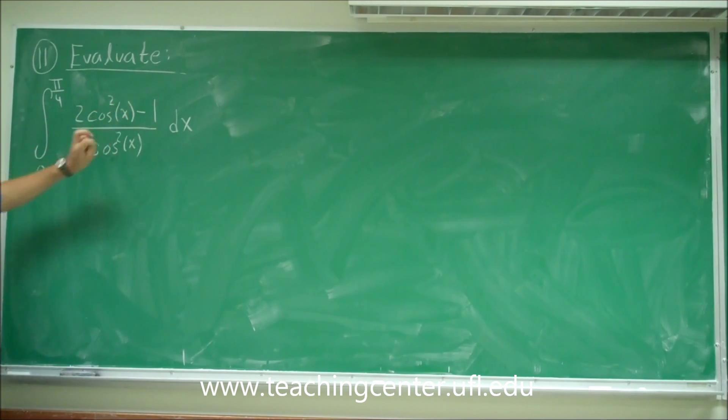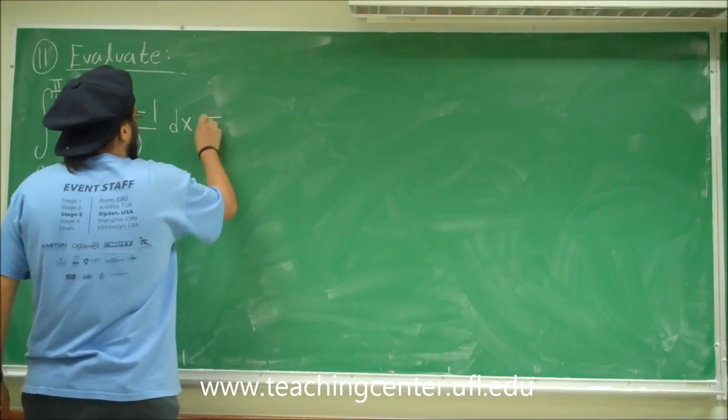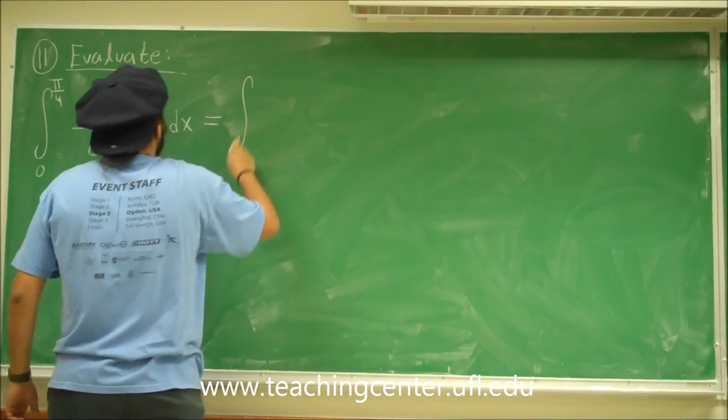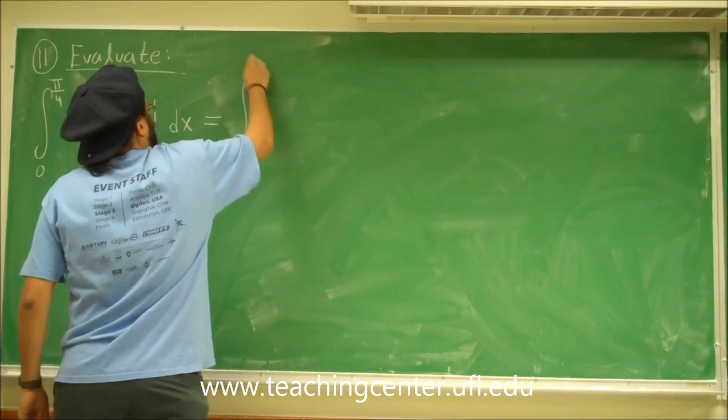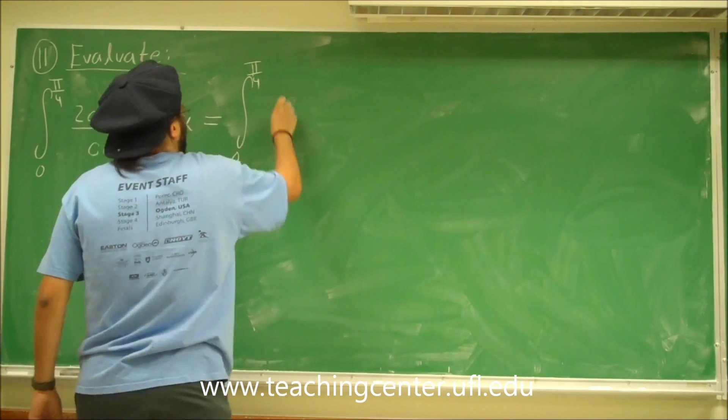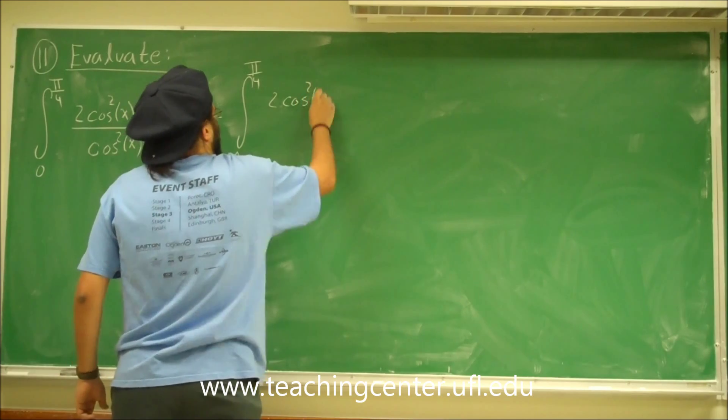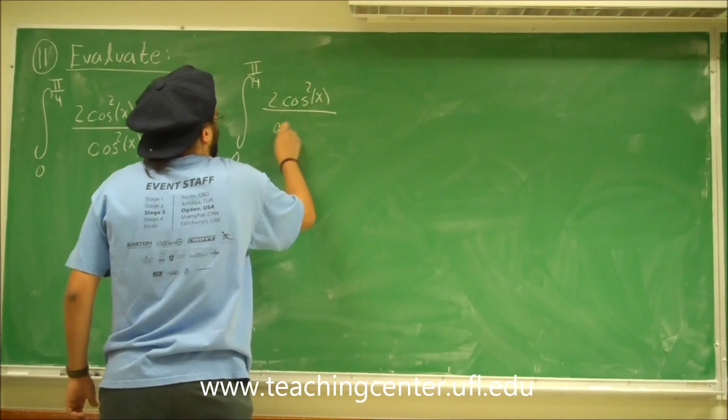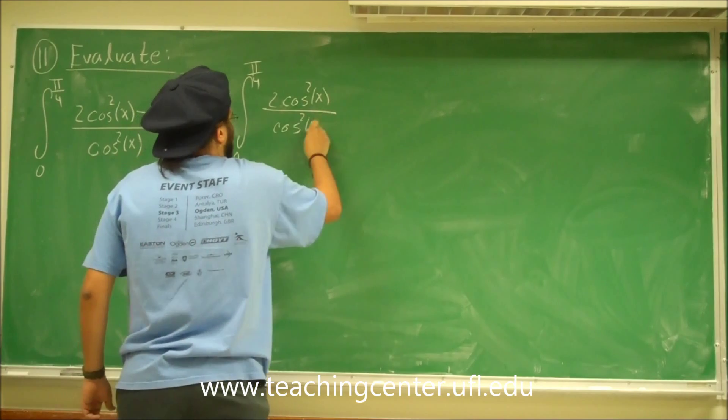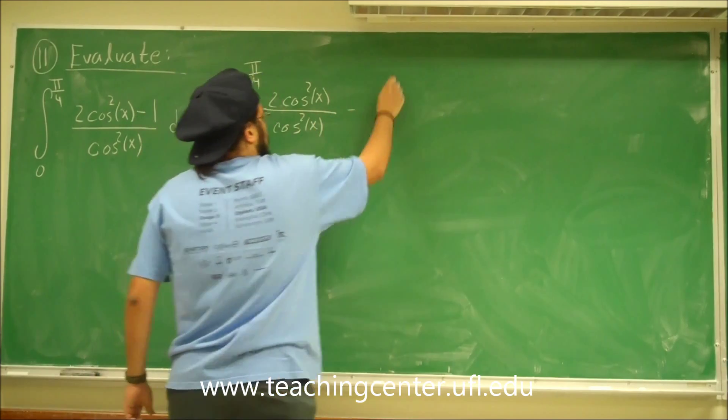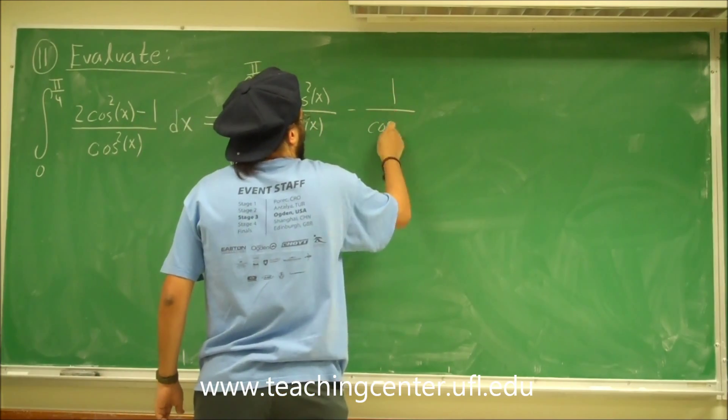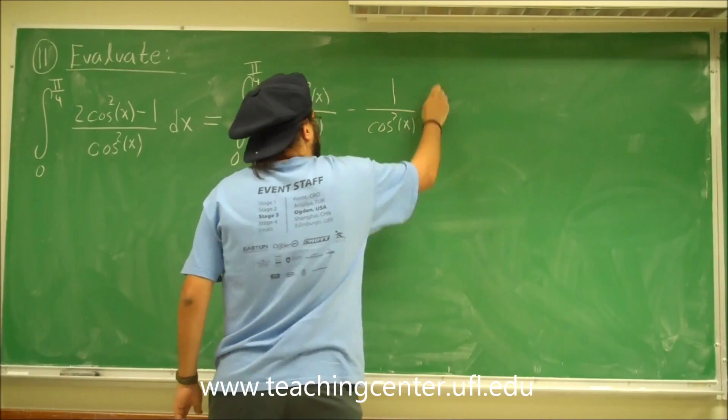So we can separate this fraction into two separate fractions. So this is equal to the integral from 0 to pi over 4 of 2 cosine squared of x divided by cosine squared of x minus 1 divided by cosine squared of x dx.